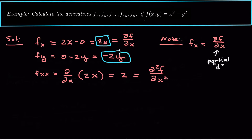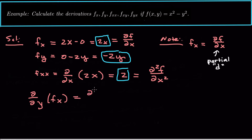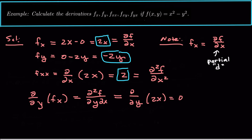For f sub xy, we take the derivative with respect to y of f sub x. The notation is ∂²f/∂y∂x — the partial y is acting on the partial x derivative, so it's a right-to-left operation. Differentiating f sub x = 2x with respect to y gives zero, because there's no y in 2x. That means there's no change in f sub x when y is changed — the function is the same regardless of the y value.